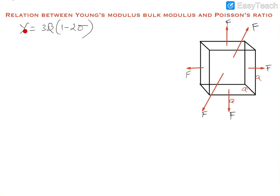So this is gamma, which is Young's modulus, this is bulk modulus, and this is Poisson's ratio. Let us assume that there is a cube of side A by A by A, and we are applying an equal force F on each of its faces perpendicular to the face. We can write down the stress and denote it by P, where stress is F upon A squared.